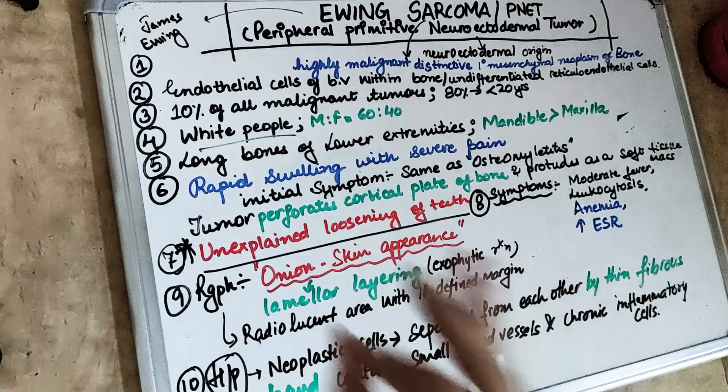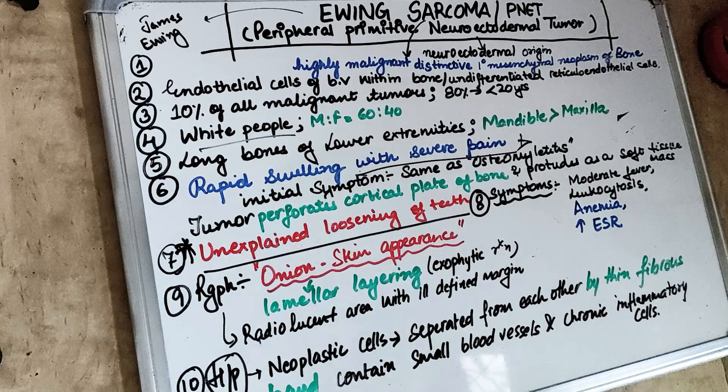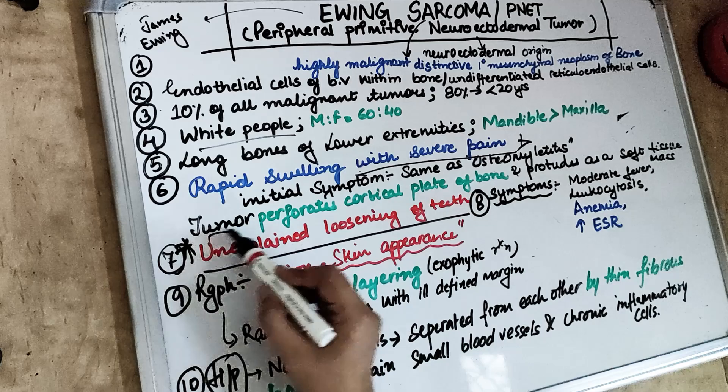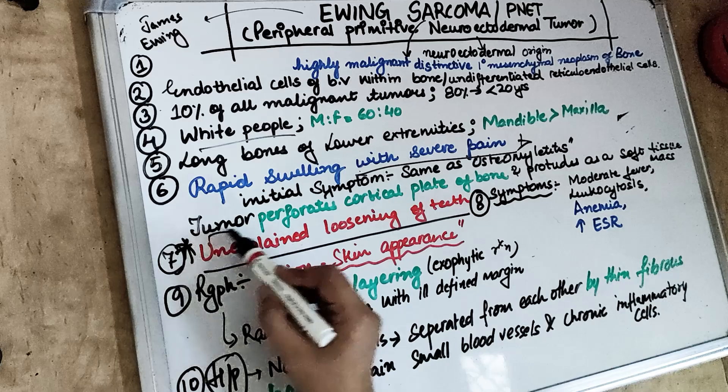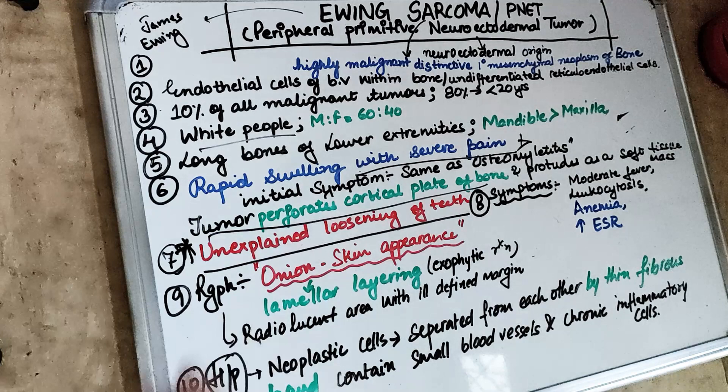It is important to remember that Ewing Sarcoma is the third most common primary malignant neoplasm of the bone, and severe pain is a key distinguishing feature — almost all other sarcomas do not show pain. This tumour perforates the cortical plate and protrudes out as a soft tissue mass.